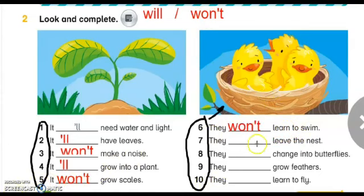Number seven: They leave the nest. Yes, they will leave the nest. فسيغادروا العش. Number eight: They change into butterflies. فسيتحولوا إلى فراشة؟ No, they won't change into butterflies. So here we have to use the negative form, which is won't.